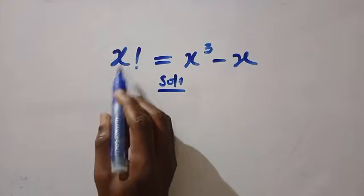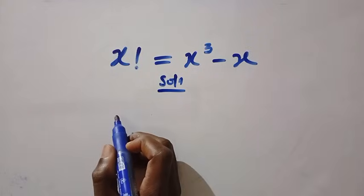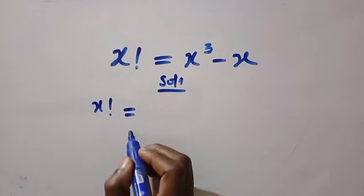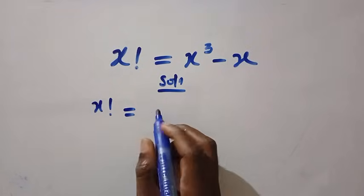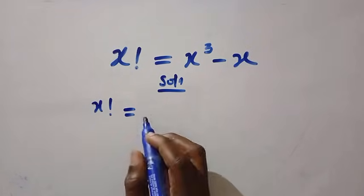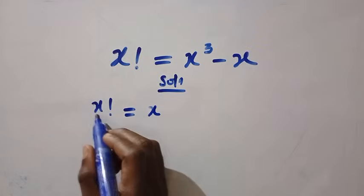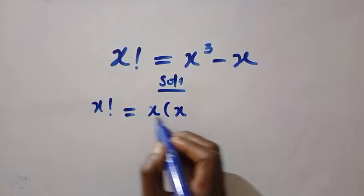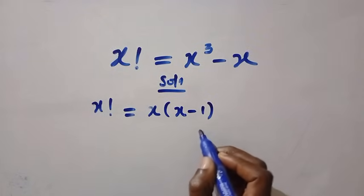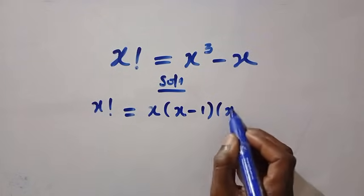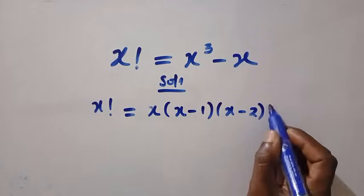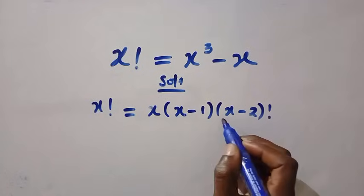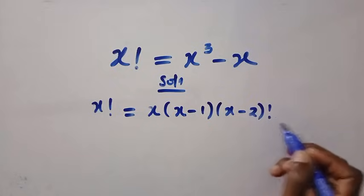From here, we have to understand the concept of factorial. If we have x factorial, this is given as an iterated number that keeps going. The first number is x, removing the factorial, then multiply by subtracting 1 from here, that is x minus 1, then it continues, x minus 2, that's how it keeps going. So the factorial that is still in here shows that we still have x minus 3, x minus 4.